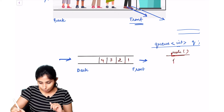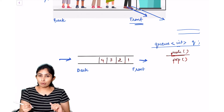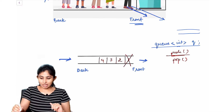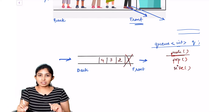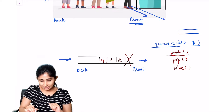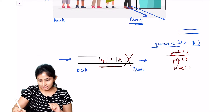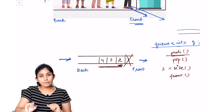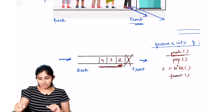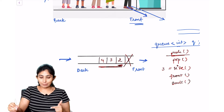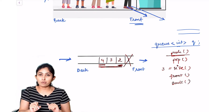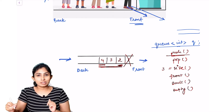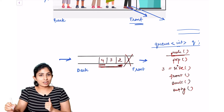There's another operation called pop, which deletes the element from the front of the queue. So queue.pop will delete 1 from my queue. There's also a size function that returns the number of elements present in the queue — currently 3 elements remain after one is removed. The front function returns the element at the front of the queue, currently 2. The back function returns the element at the back, currently 4. Finally, the empty function returns true if the queue is empty and false if it is not.